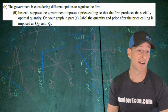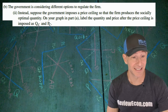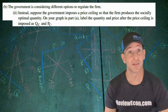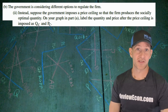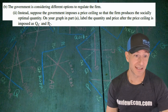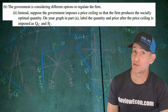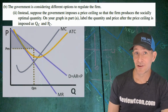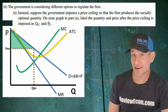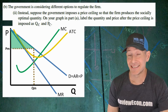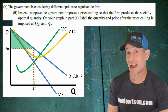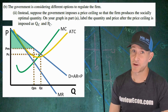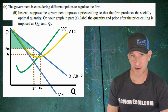The next part of B assumes the government imposes a price ceiling on the firm to force them to produce the socially optimal level of output. On the graph we've already drawn, we have to label the quantity and price as QC and PC respectively. The quantity we're looking for is at MC equals D, and that's also where the price will be. Labeling both of those gives us the point for this part.